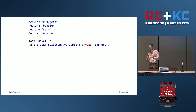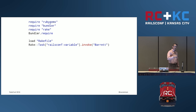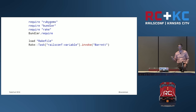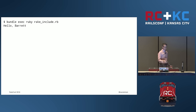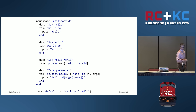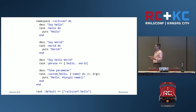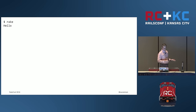This also shows how to use Bundler in a plain old Ruby script — just `require 'bundler'` then `Bundler.require`. We could have had the Rake gem defined in the Gemfile and it would have been required, but I wanted to show it separately. We run that Ruby script in the context of our Gemfile with `bundle exec ruby rake_include.rb` and it says 'hello Barrett'. And finally we add a default task at the bottom — if you just run `rake` it'll complain that there's no default task, so we give it one in the global namespace, and the default task is `railsconf:hello`. Run `rake` and it says hello.